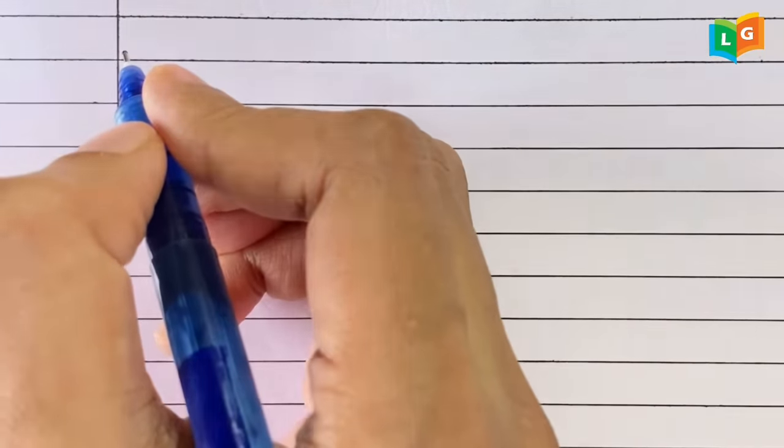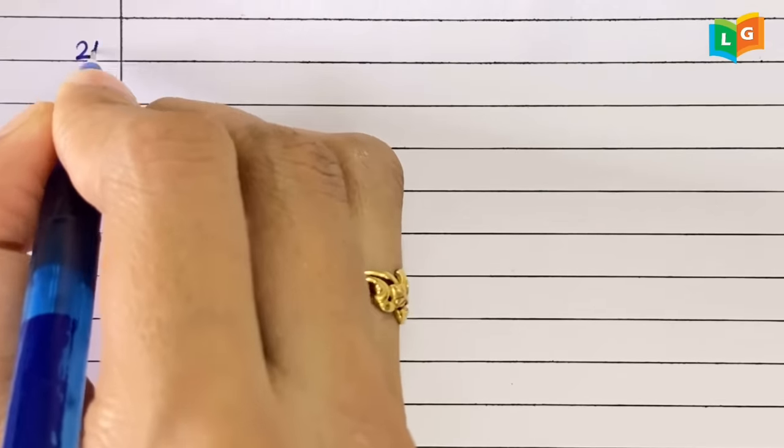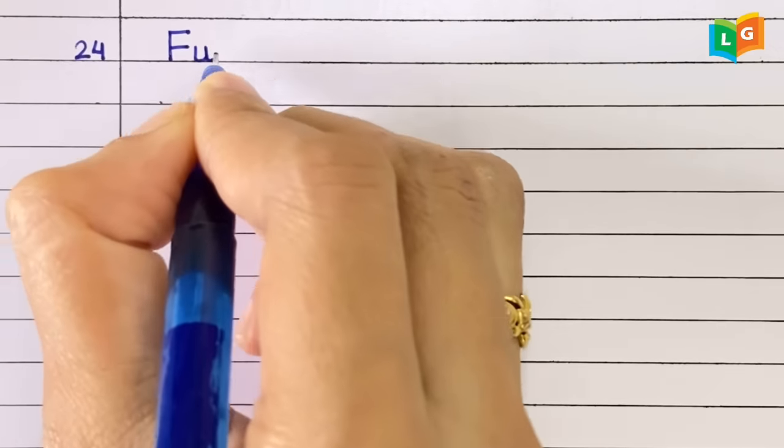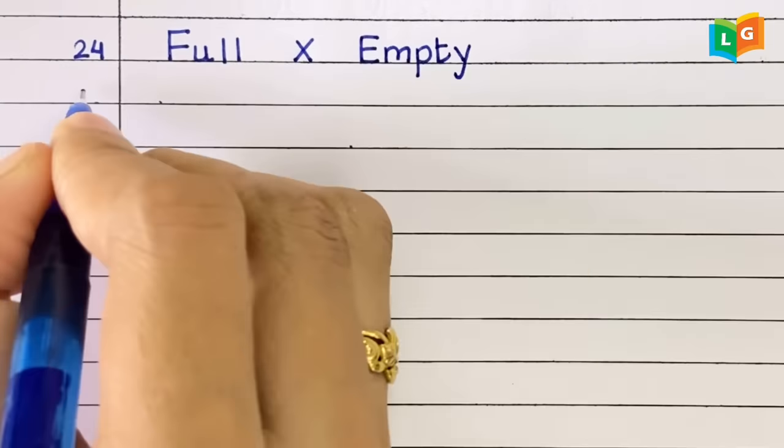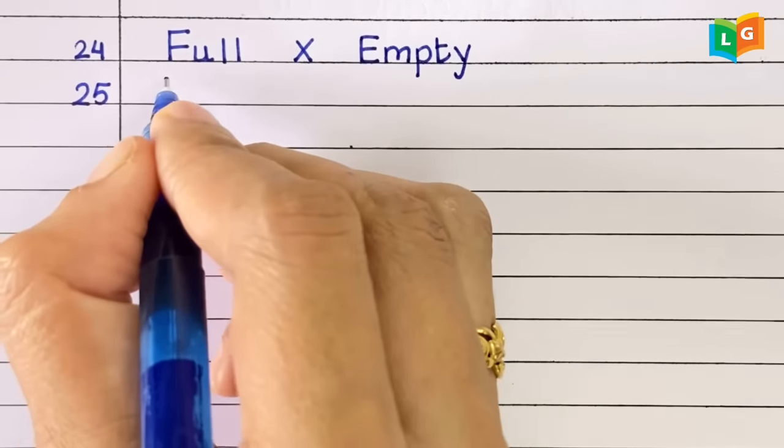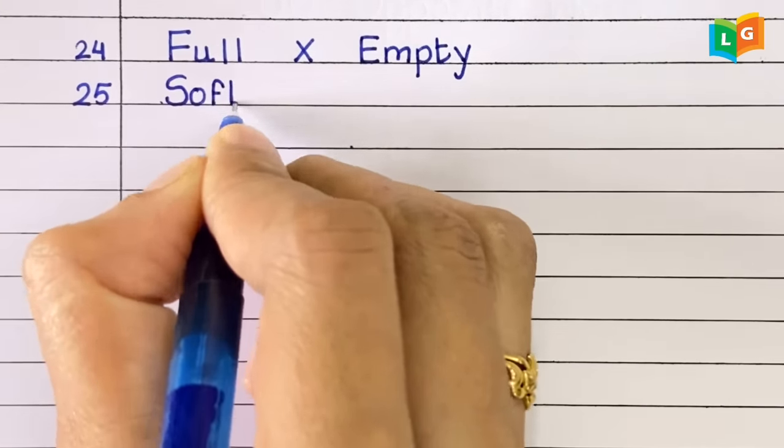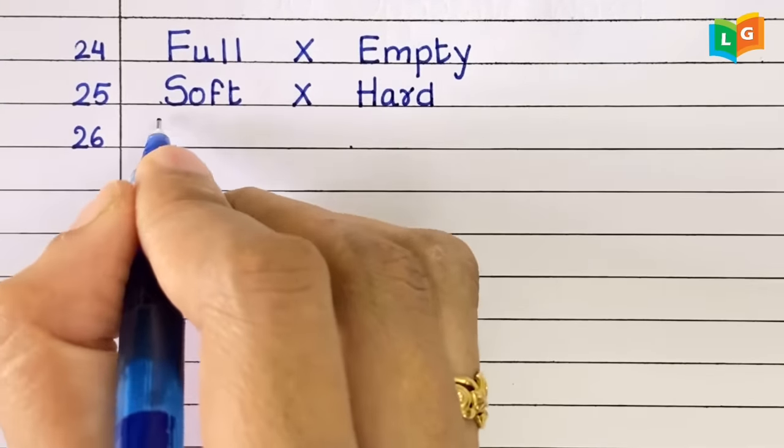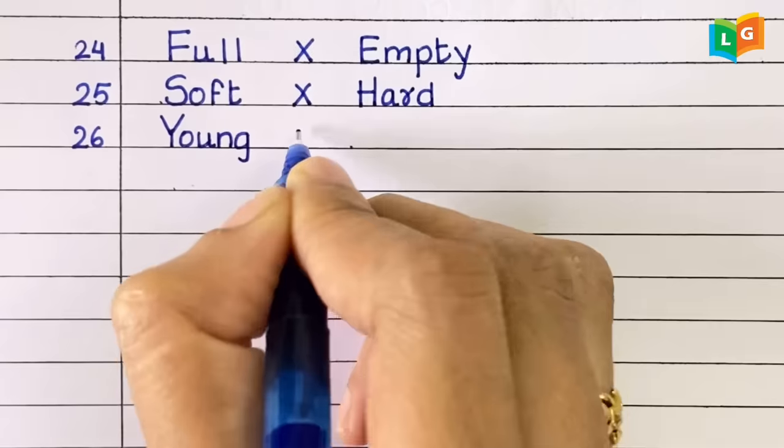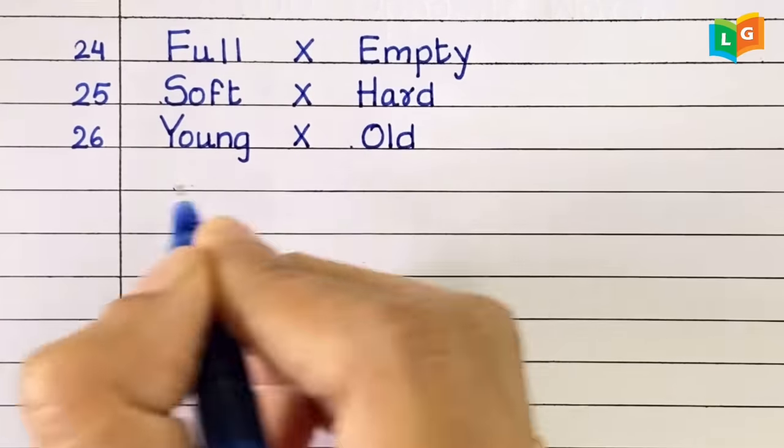Twenty-four, full, empty. Twenty-five, soft, hard. Twenty-six, young, old.